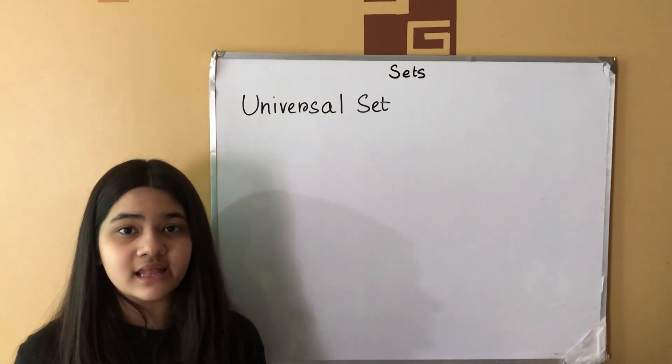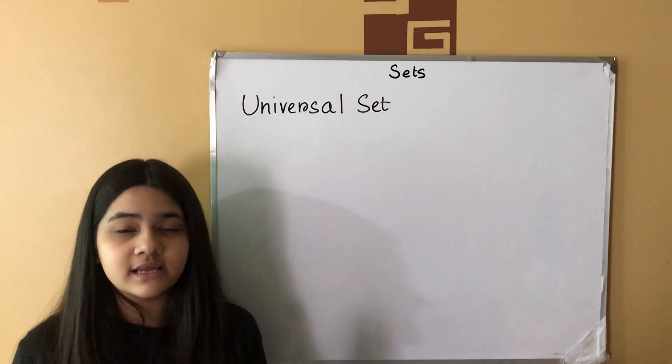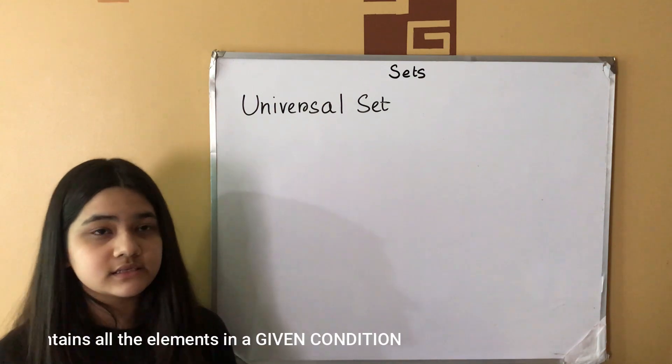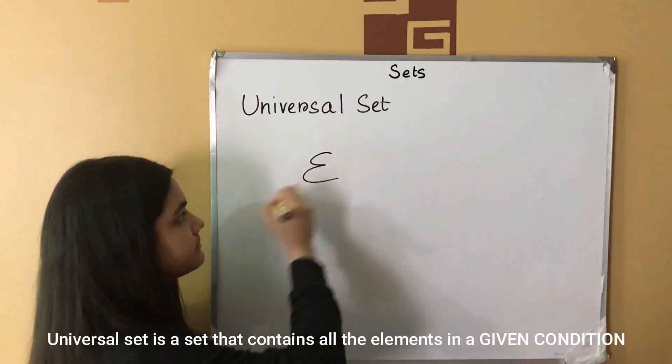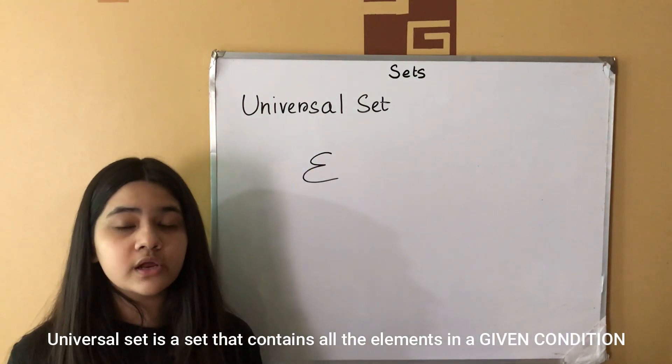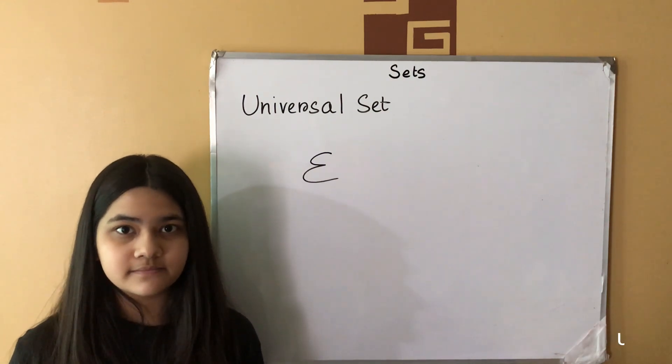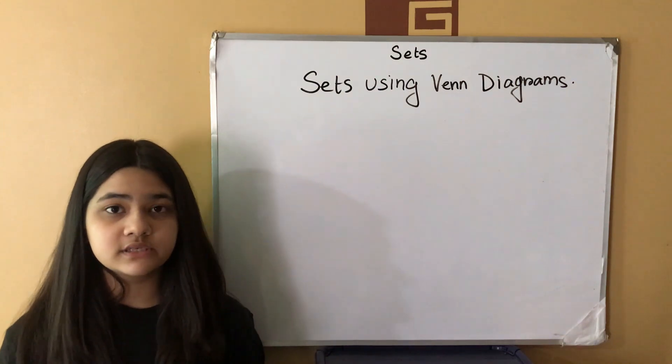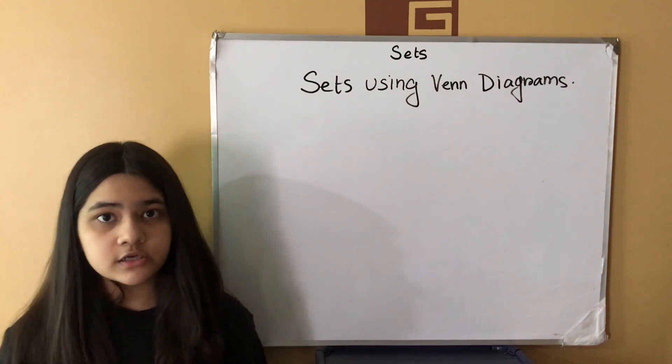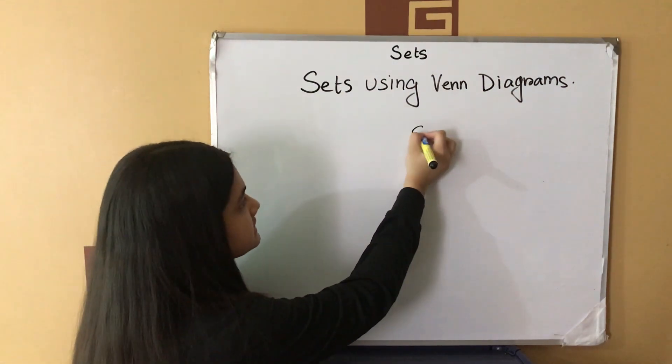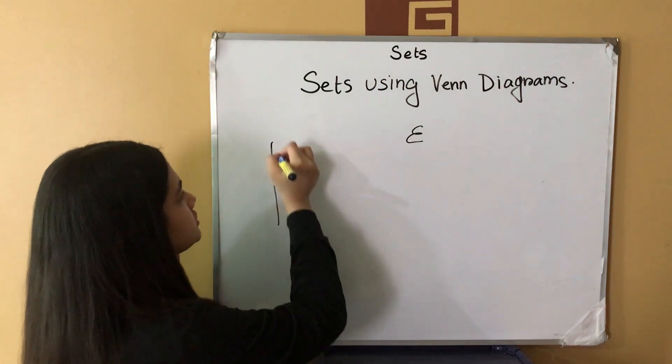Universal set is a set that contains all the elements in a given condition. It is denoted by this symbol. Now, here we are going to emphasize on the key words given condition. We can represent sets using Venn diagrams. First, to represent the universal set, we draw a large rectangle.